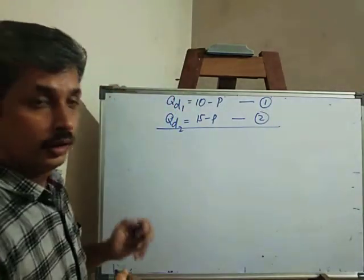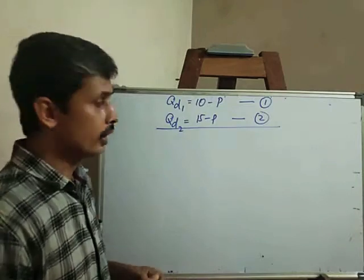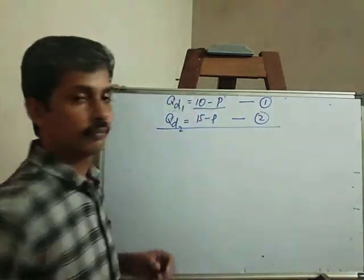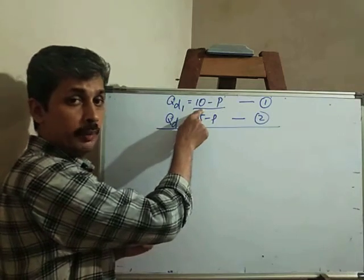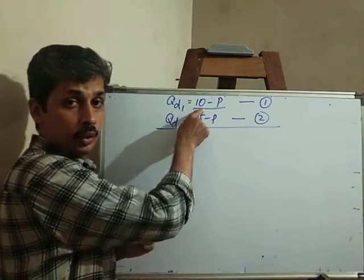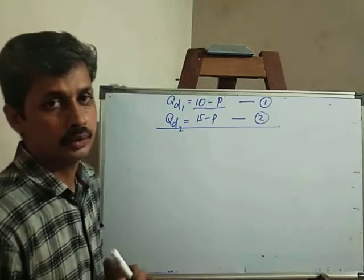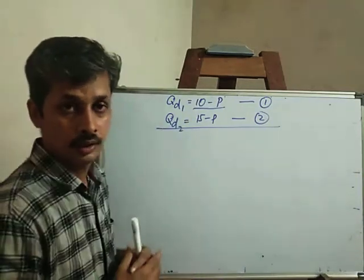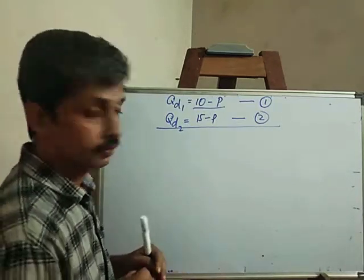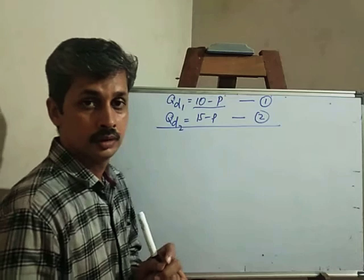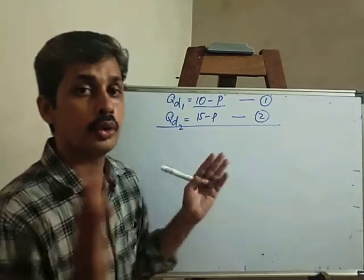The first consumer demand curve equation is qd1 is equal to 10 minus p. This equation shows that when price is more than 10, the first consumer demands zero units of the commodity.